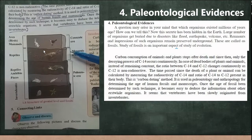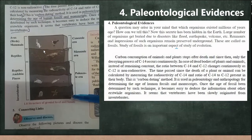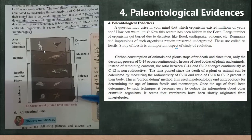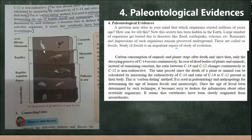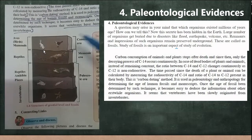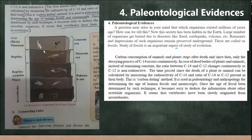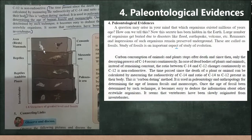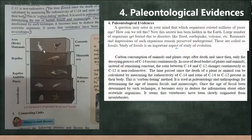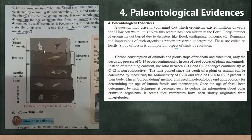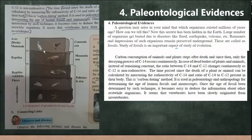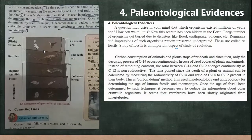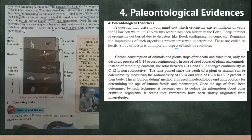By digging the ground surface step by step, at various stages you will find different fossils. From this, paleontologists concluded that vertebrates were slowly originated from invertebrates. The key conclusion from paleontological evidence is that vertebrates originated from invertebrates, supporting the idea that all life shares a common ancestry and a common origin.